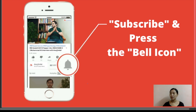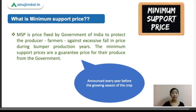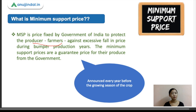Let's go to our first slide where we're going to talk about what minimum support price is. The minimum support price is basically a fixed price set by the Government of India to protect producers — which are farmers — against excessive fall in price during bumper production years. These are guaranteed prices for produce from the government.